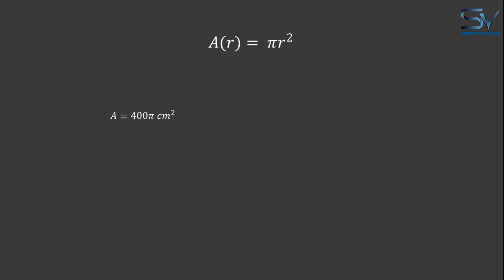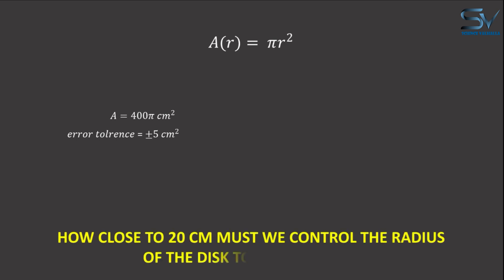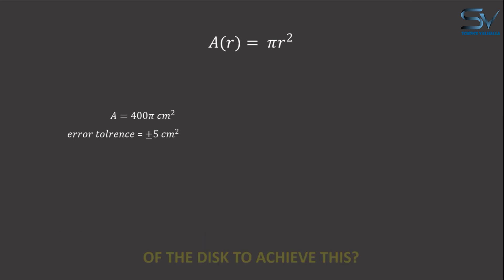Within an error tolerance of plus or minus 5 square centimeters, the question is: how close to 20 centimeters must we control the radius of the disk to achieve this? Let's solve this problem. What exactly does the term error tolerance mean in this context?